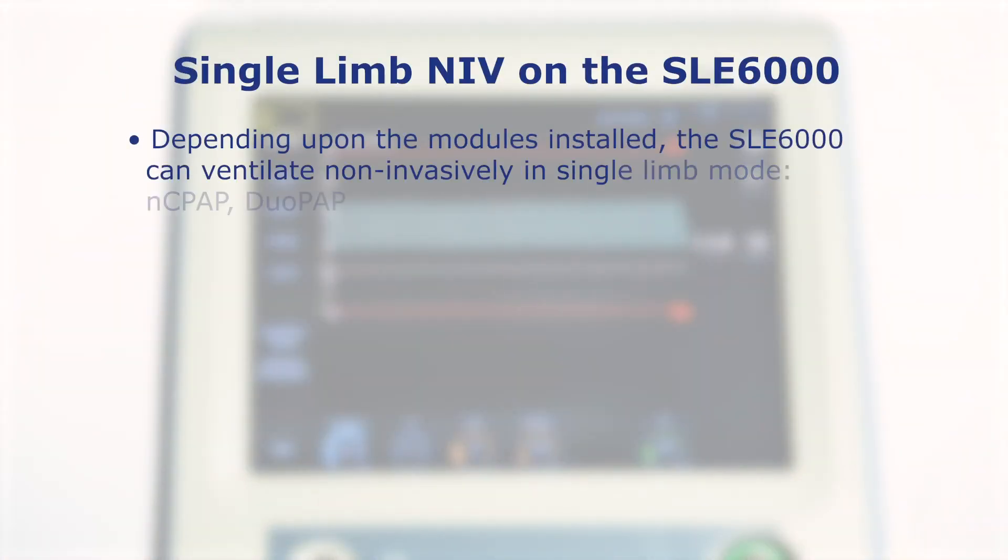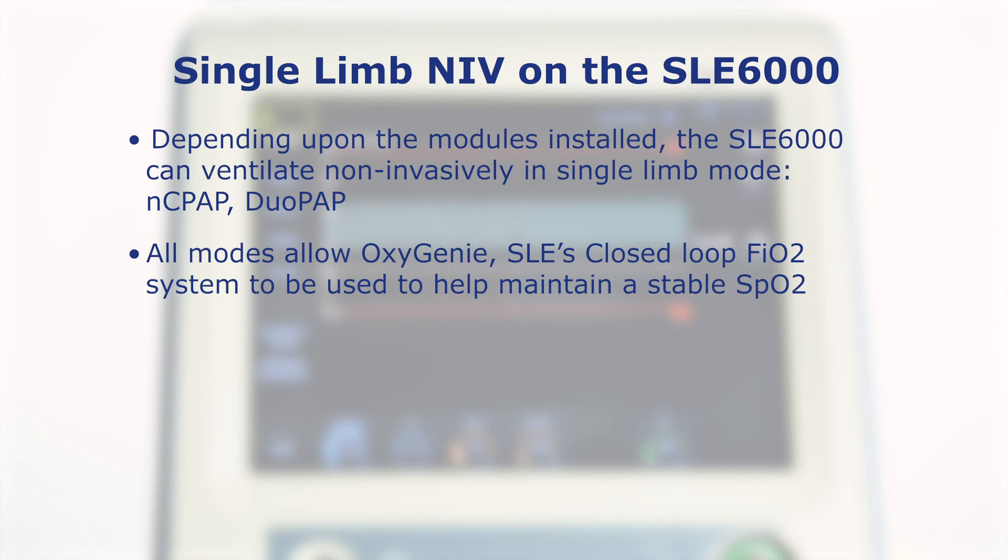Depending upon the modules installed, the SLE6000 can ventilate non-invasively in single limb mode: NCPAP and DUO-PAP. All modes allow OxyGenie, SLE's closed-loop FiO2 system, to be used to help maintain a stable SpO2. All modes are designed to work with SLE's multi-purpose circuit.